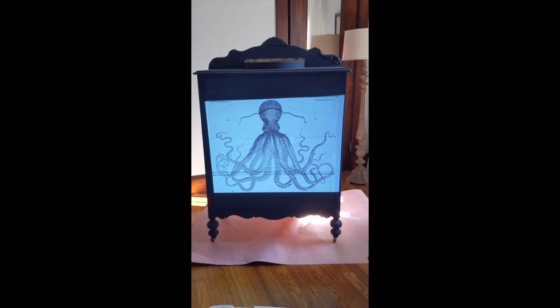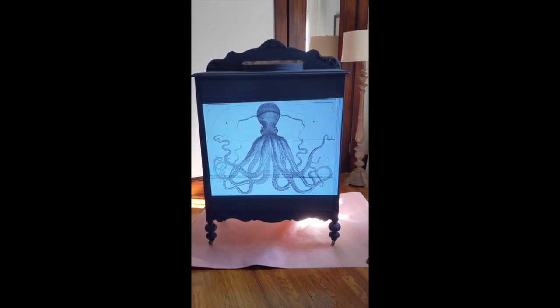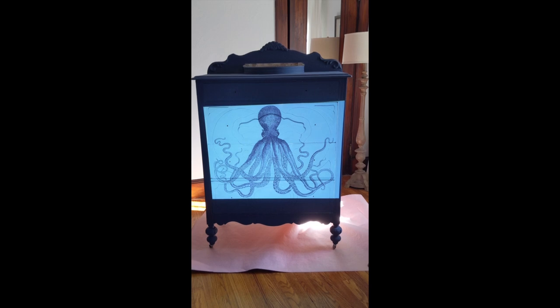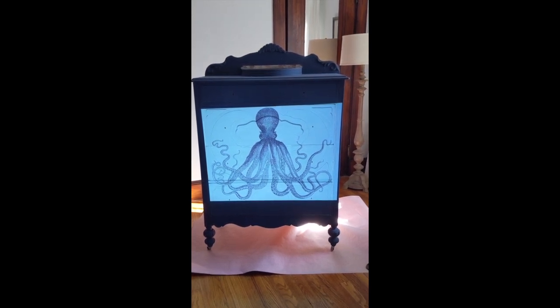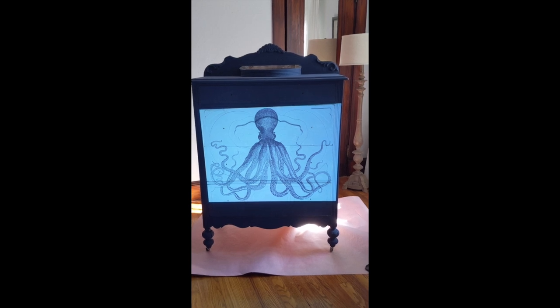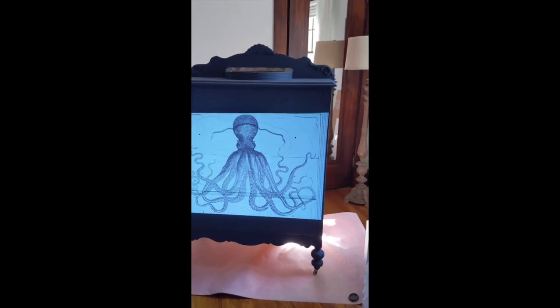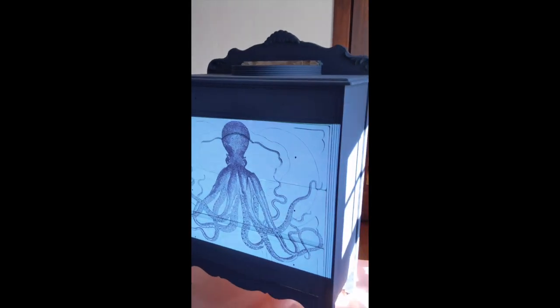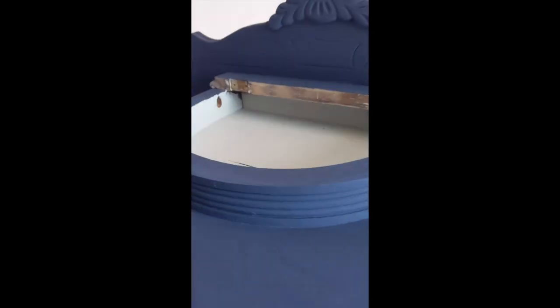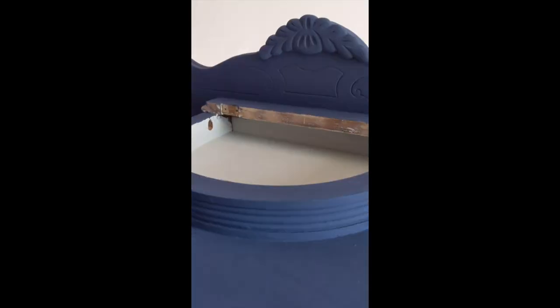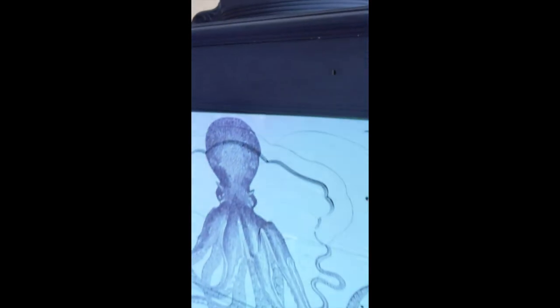I wanted to share the setup that I have in order to transfer the vintage image onto the dresser. As you can see, this is the dresser here. It's been painted, but there's a bit that I still need to paint here. I'm going to paint that white inside and replace the top.